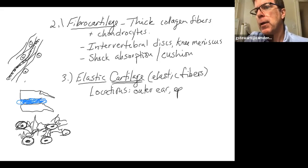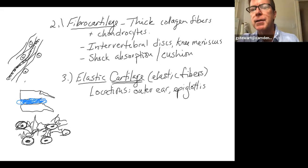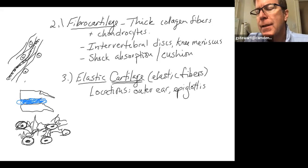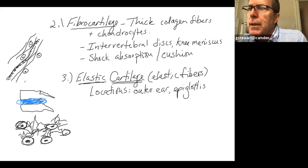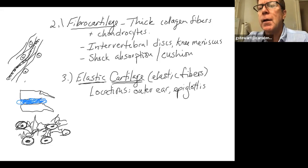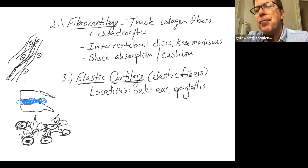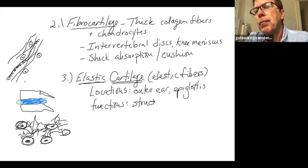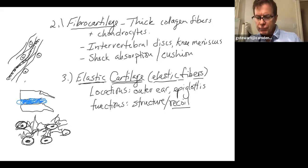Classic locations for elastic cartilage are the outer ear, which is full of elastic cartilage giving it structure and the ability to recoil — fold your ear forward and it snaps back — and the epiglottis, the flap of elastic cartilage that covers the trachea when we swallow so nothing goes down the windpipe. Function: structure and recoil.